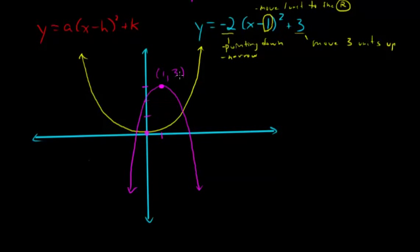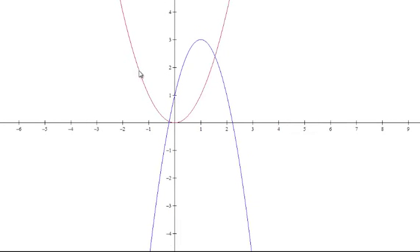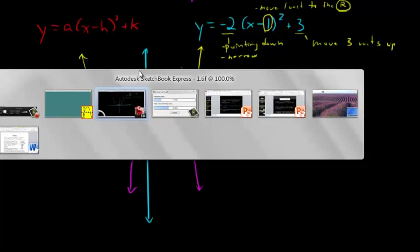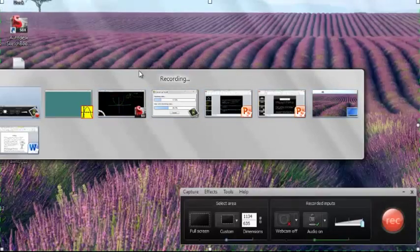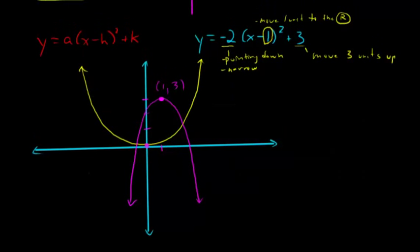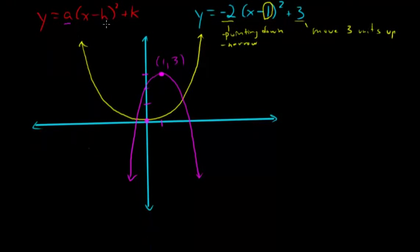Now the only thing that we were probably a little bit imprecise on was where it would intercept the y and x axis. And that's something that we could use our equations to figure out. But we get the general shape here just by looking at the equation. And that's how we can use vertex form, the a, the h, and the k in vertex form to help us rough out what the shape and location of a parabola might be.